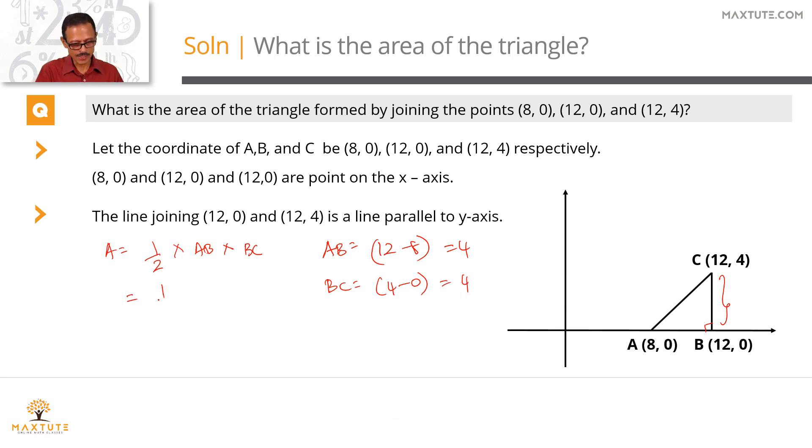Area is equal to half times AB, which we found to be 4, and BC, which is also equal to 4. 4 times 4 is 16, and 16 by 2 is 8. So the area of this right triangle is equal to 8 square units.